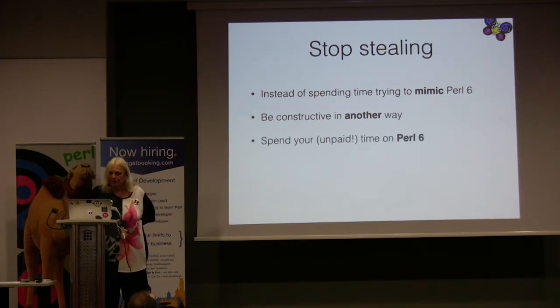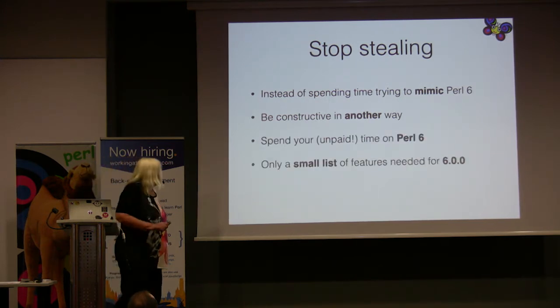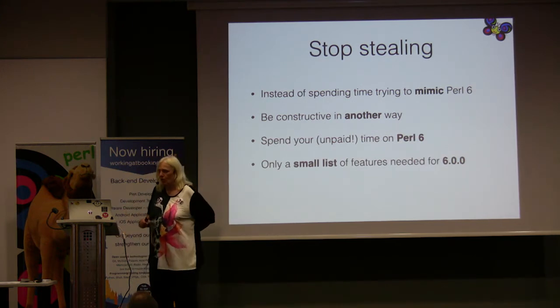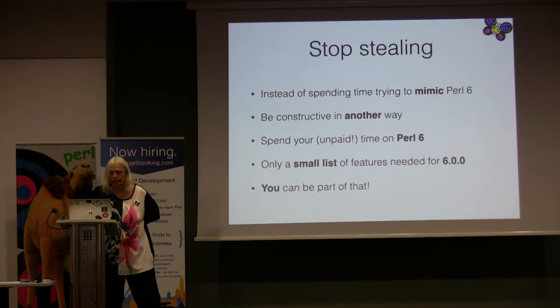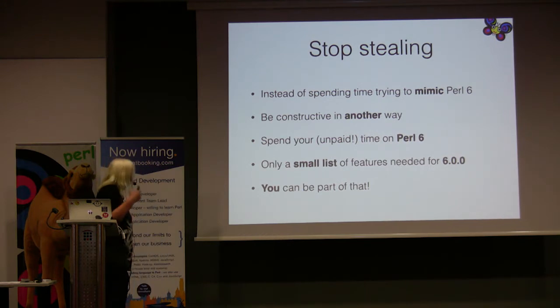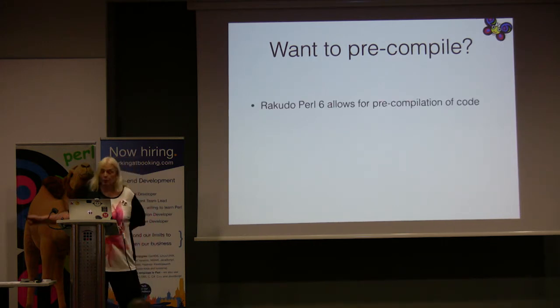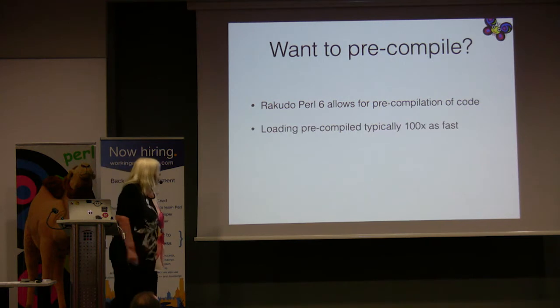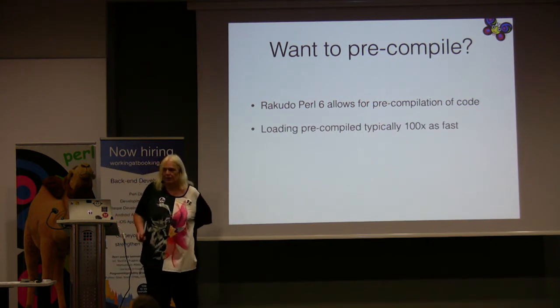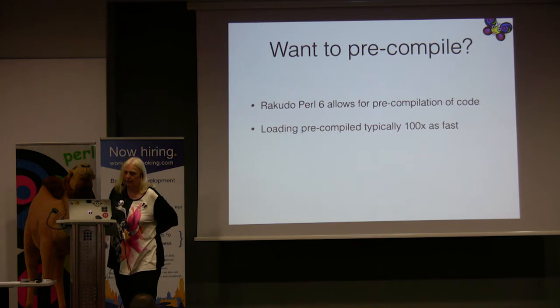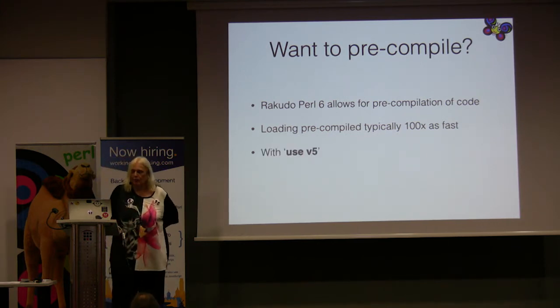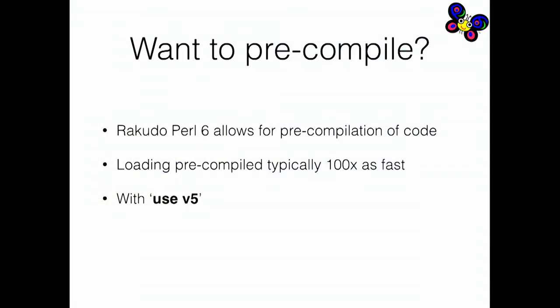Spend your unpaid time on Perl 6. There's only a small list of features still needed for Perl 6.0, and you can be a part of that. For instance, if you want to pre-compile your code, use Perl 6, because Rakudo Perl 6 allows you to pre-compile your code. Loading pre-compiled code is typically 100 times as fast as compiling it on the fly.